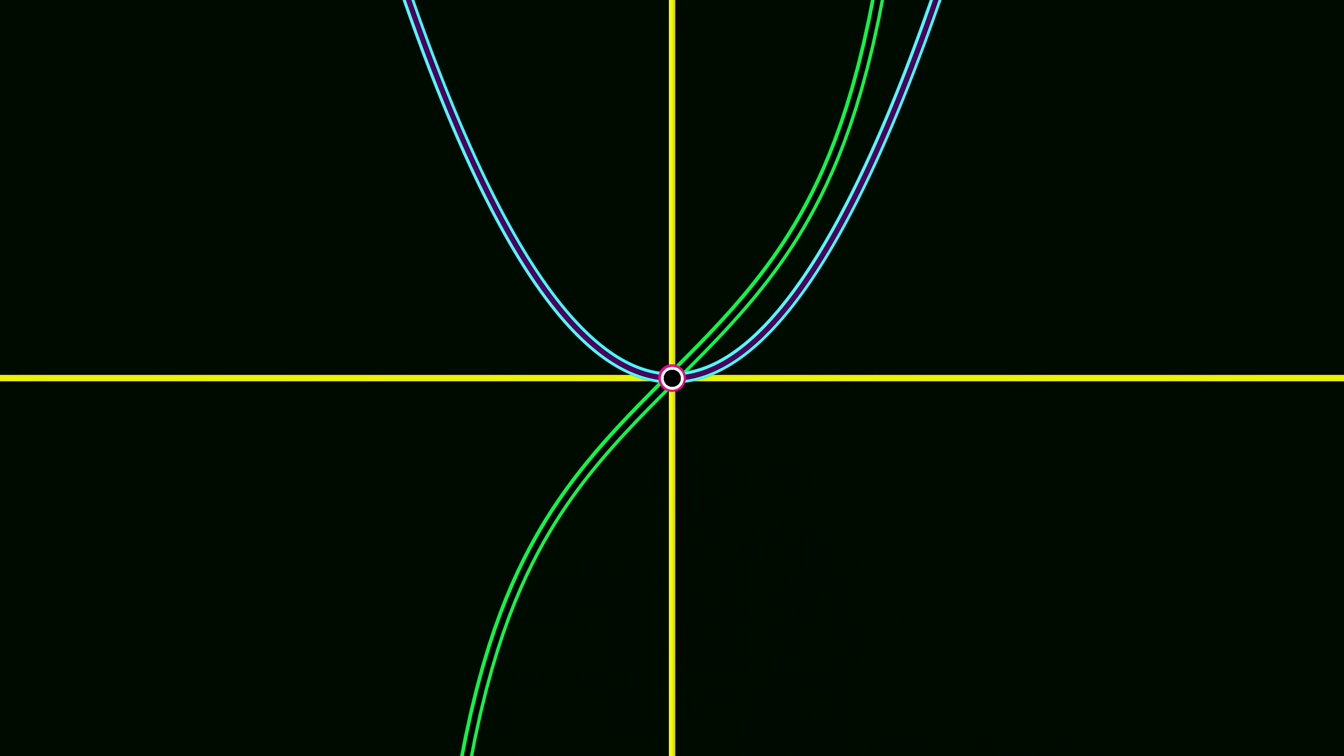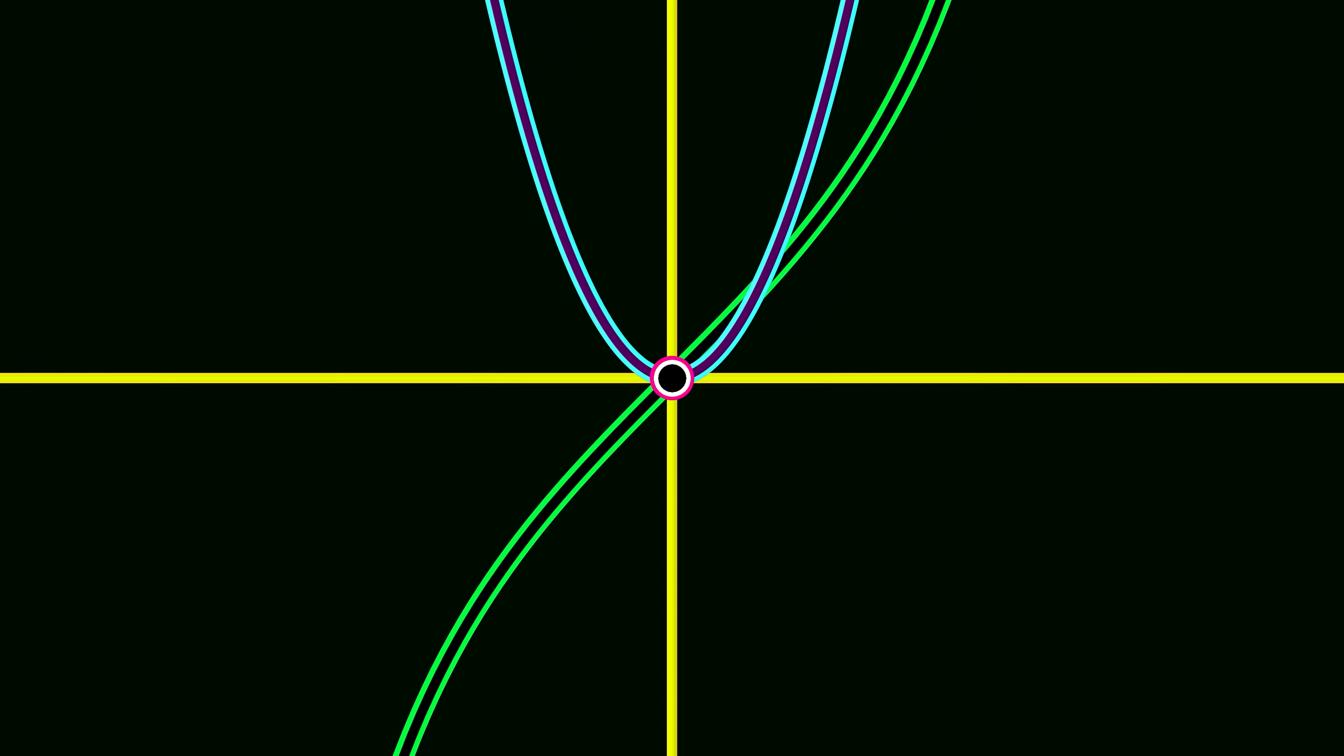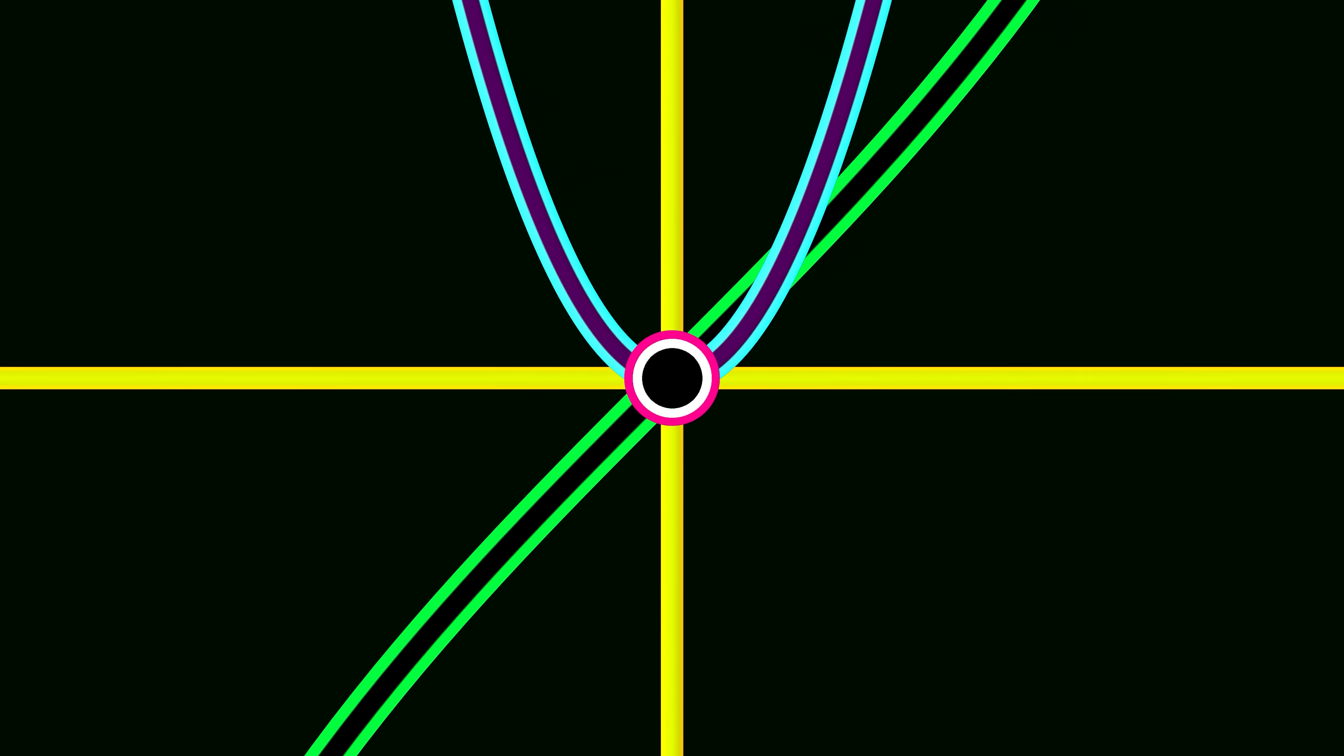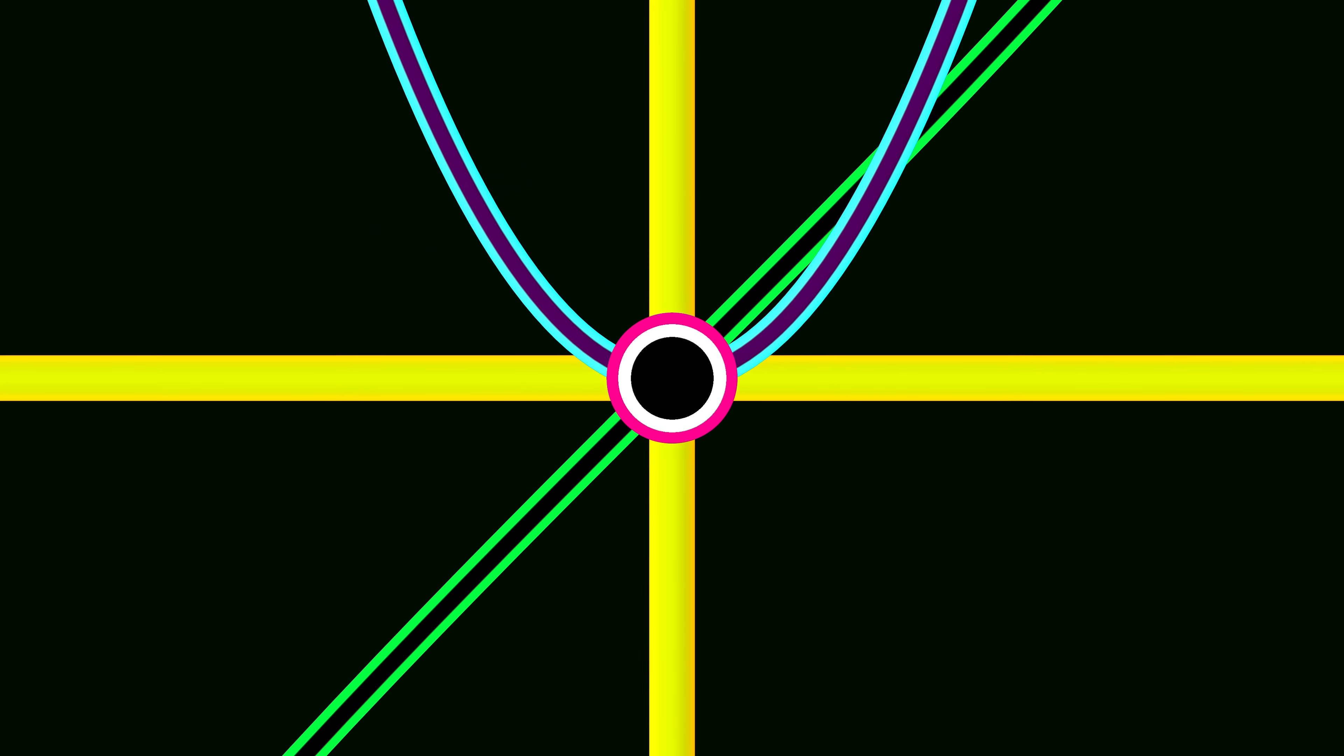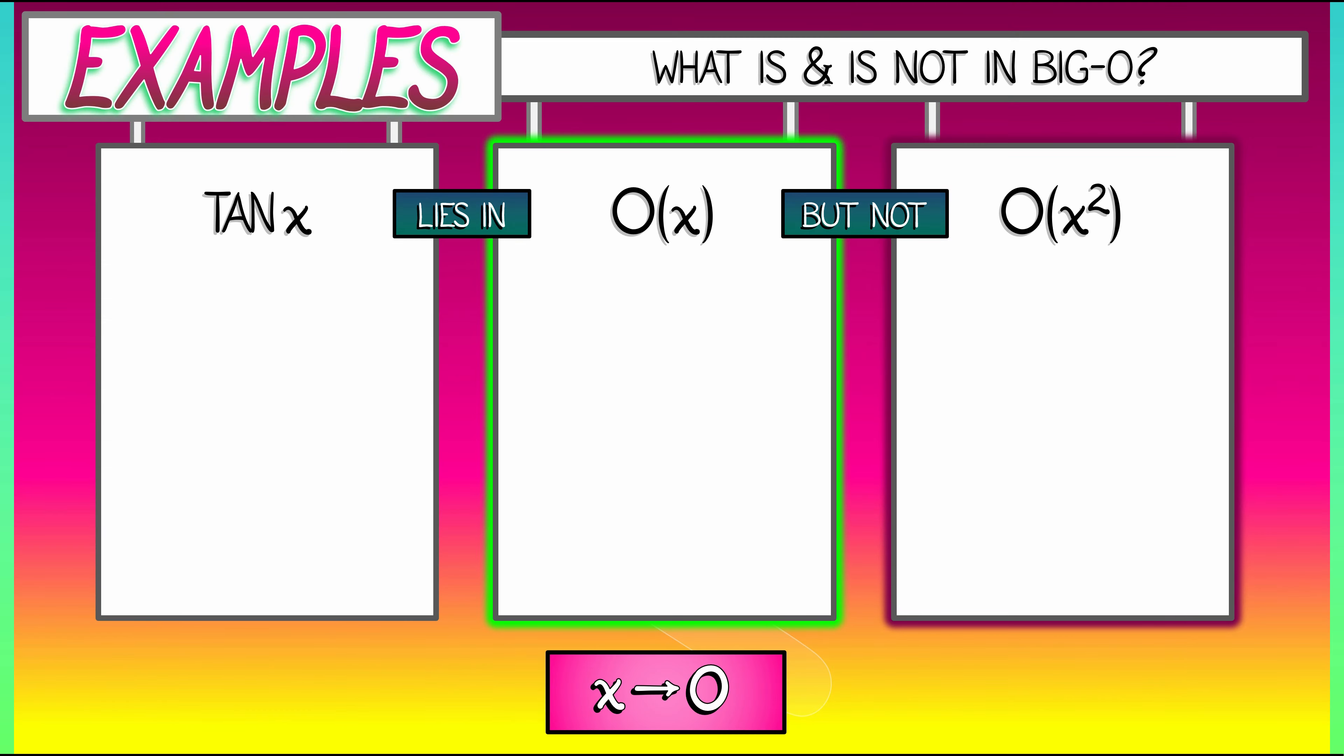But if we draw a quadratic curve, if we look at x squared, that dips below the tangent line. And we could multiply by 2, or 5, or 10, or 100. It doesn't matter. In the limit, as you get closer and closer to zero, the tangent exceeds that quadratic curve. So that's why tangent is in big O of x, but not big O of x squared.